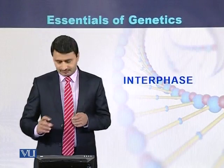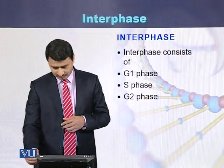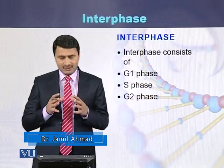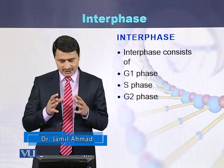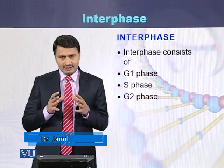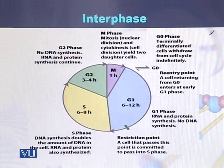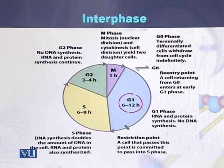Interphase consists of three phases: G1 phase, S phase, and G2 phase. In this diagram we can see all three phases of interphase. This is G1 phase, this is S phase, and this is G2 phase.